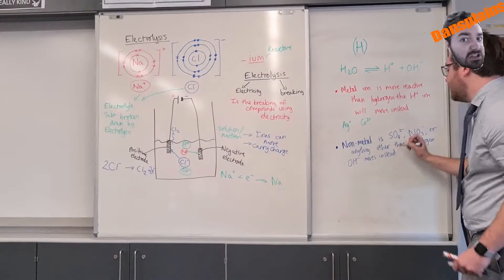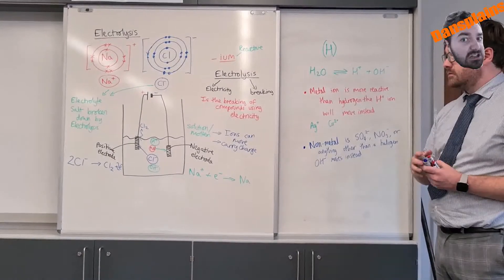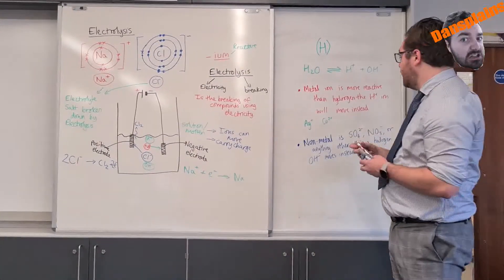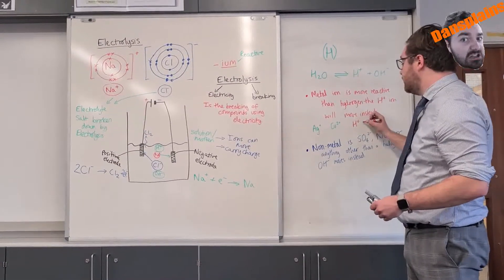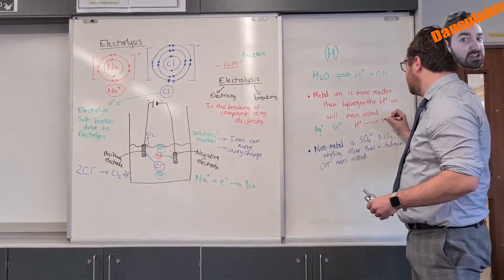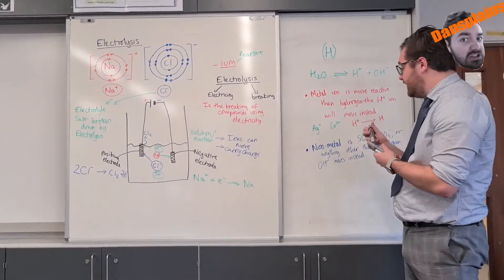Now we do have to work out what those half equations are going to be. So the first one, if the hydrogen moves, H+ moves - it moves to the negative electrode. So it will gain an electron, so I'll put it gaining an electron.